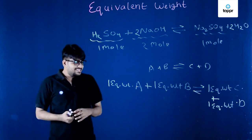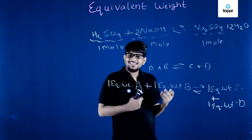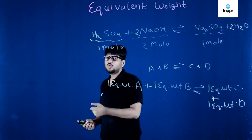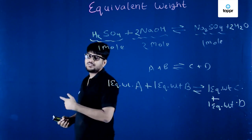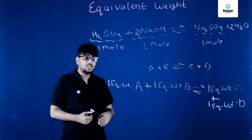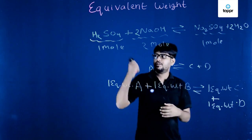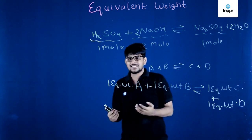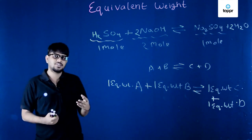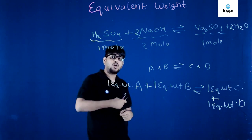See how easy the task becomes — I don't even need to balance the reaction. I simply say one equivalent weight of H2SO4 reacts with one equivalent weight of NaOH to give one equivalent weight of Na2SO4. No need to deal with coefficients of two and four. But how do I calculate equivalent weight?